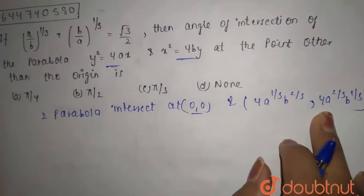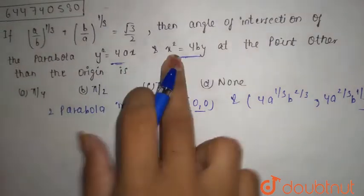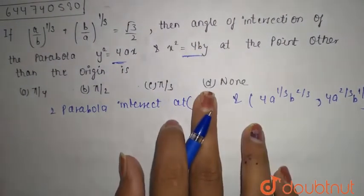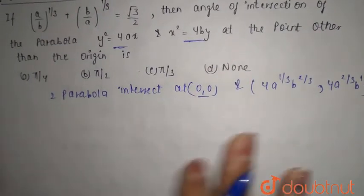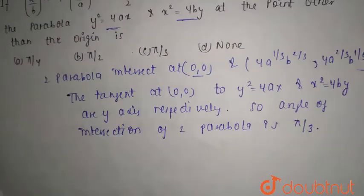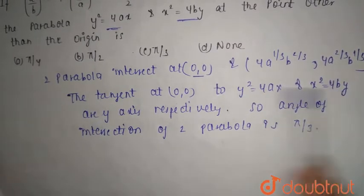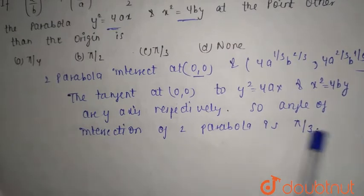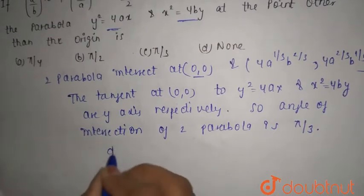The tangents at (0, 0) to the parabolas y² = 4ax and x² = 4by are the y-axis and x-axis respectively. The angle of intersection of the two parabolas is π/3. We use the fact that dy/dx gives the slope of the tangent.